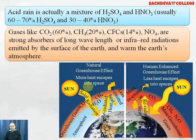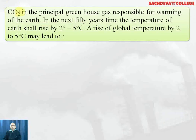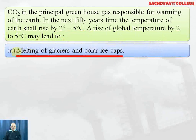You can see the greenhouse effect. CO2 is the principal greenhouse gas responsible for warming of the earth. In the next 50 years, the temperature of the earth shall increase by 2 to 5 degrees. A rise of global temperature by 2 to 5 degrees may lead to melting of glaciers and polar ice caps, which is going to become a big problem for drinkable water worldwide.